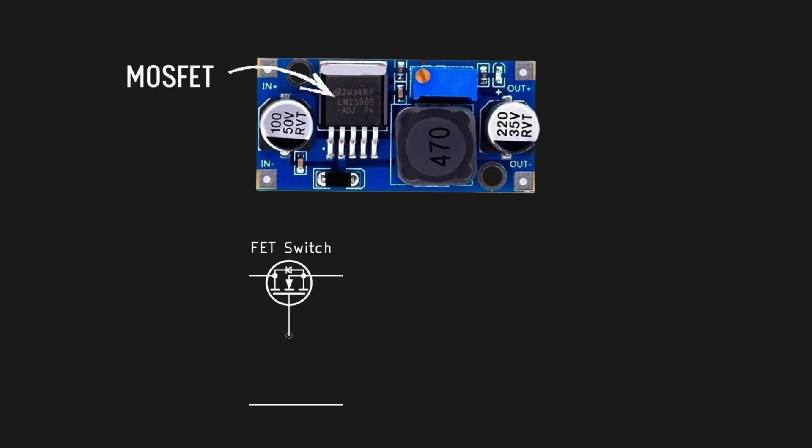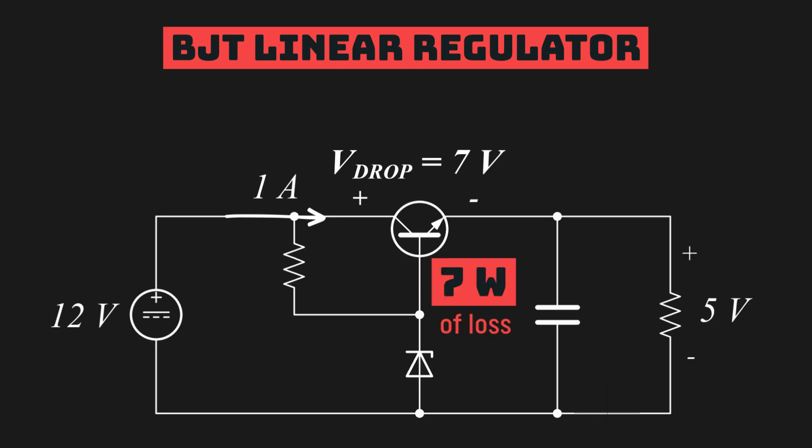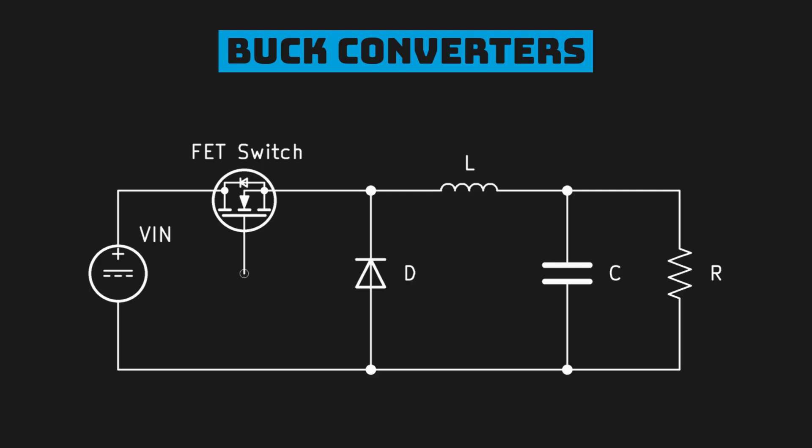Typical buck converters are made of a MOSFET, a diode, an inductor and a capacitor with a voltage input and a load. While LDOs rely on the linear mode of transistors to create a constant voltage drop, buck converters alternate the switch between fully on or off.